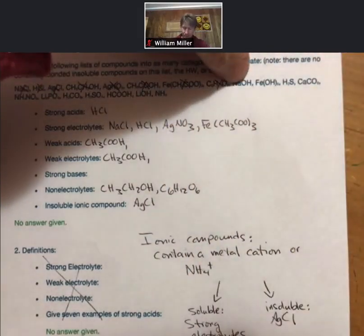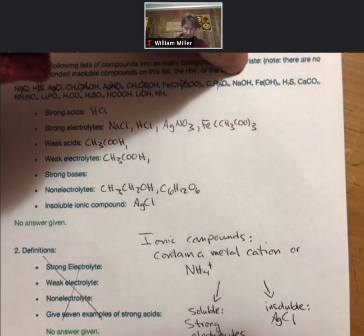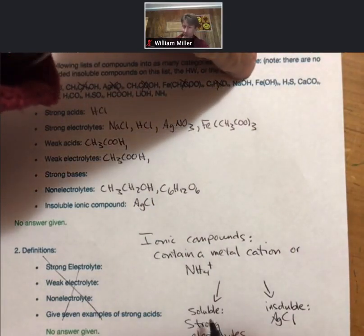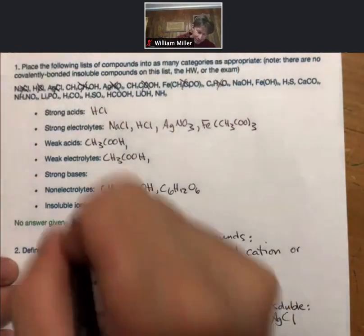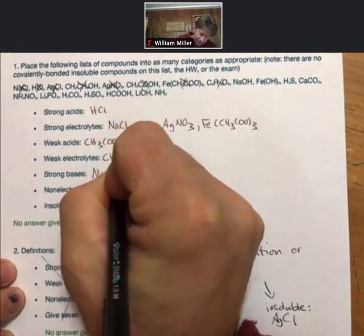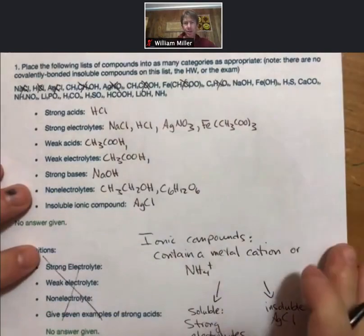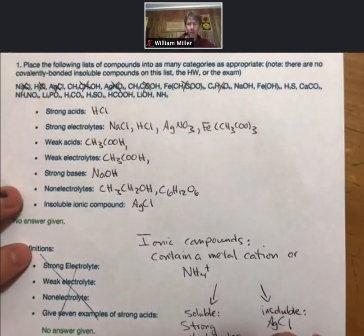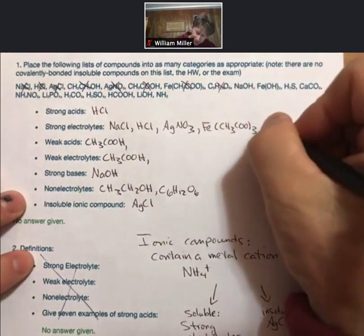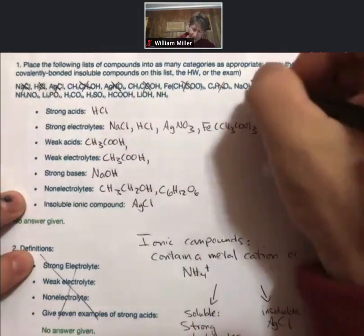Metal cation, sodium, going to be soluble. Strong electrolyte for sure. Has hydroxide group, going to be a strong base. Because we consider in this course the strong bases are the group 1 hydroxides. And strong bases are also strong electrolytes.